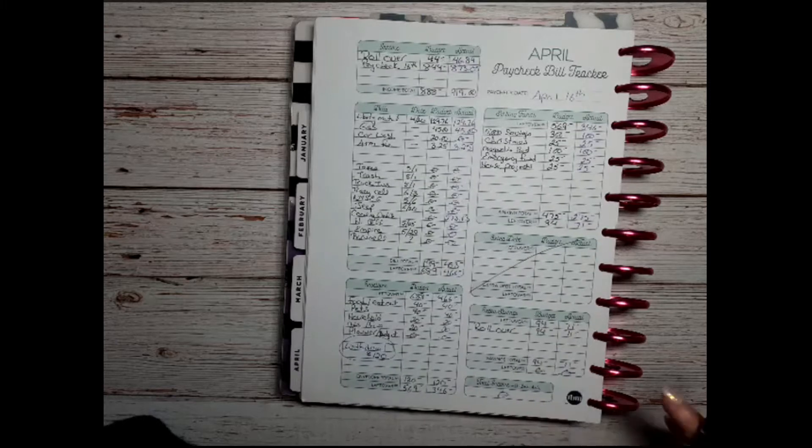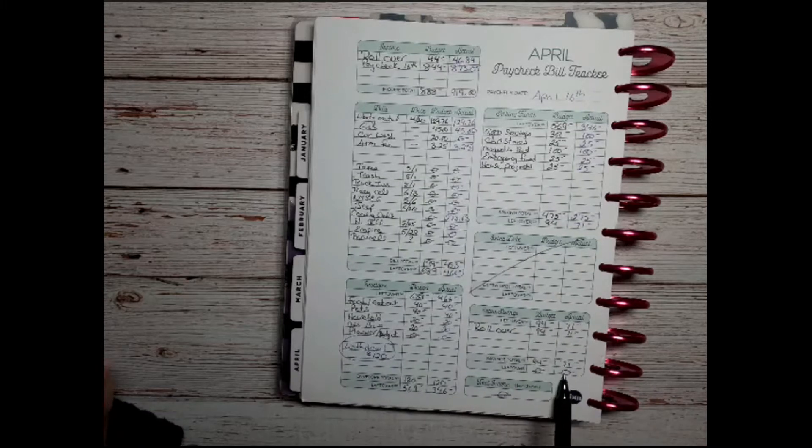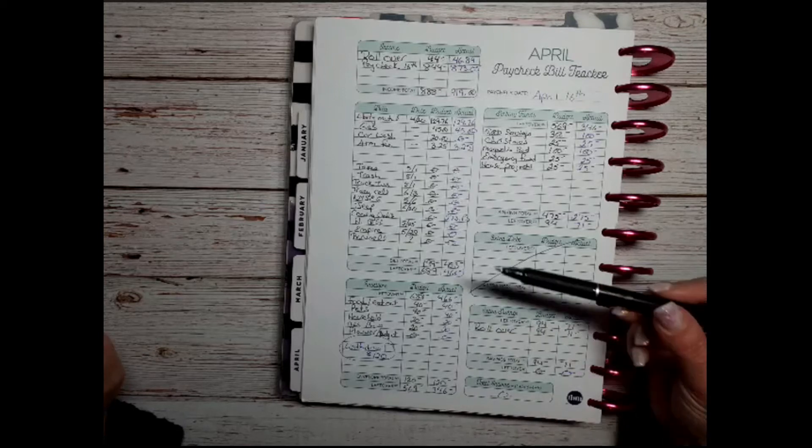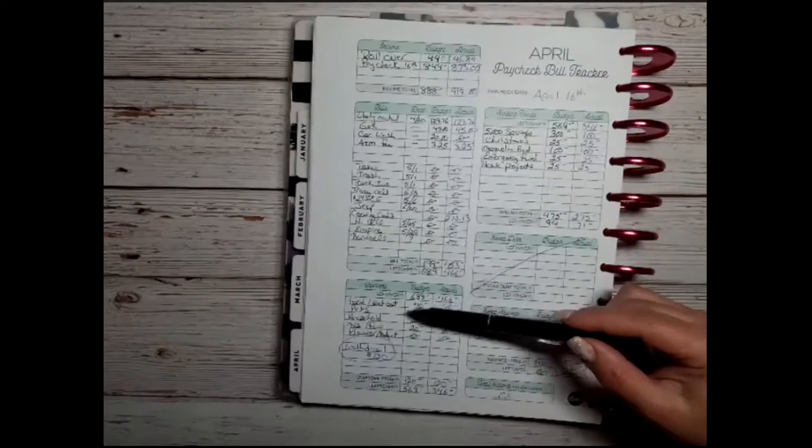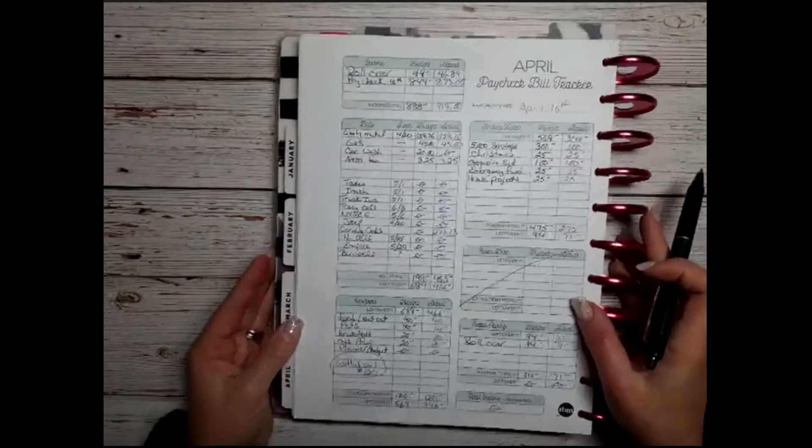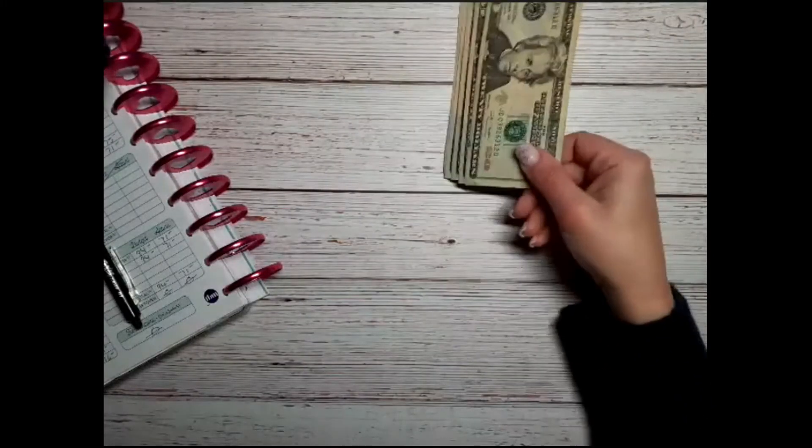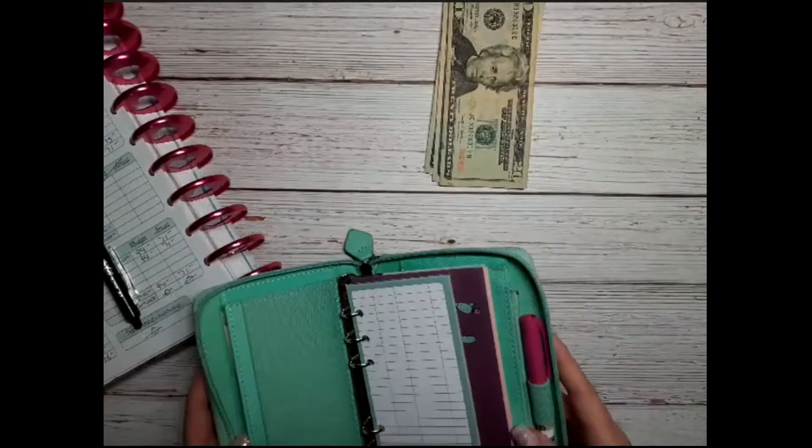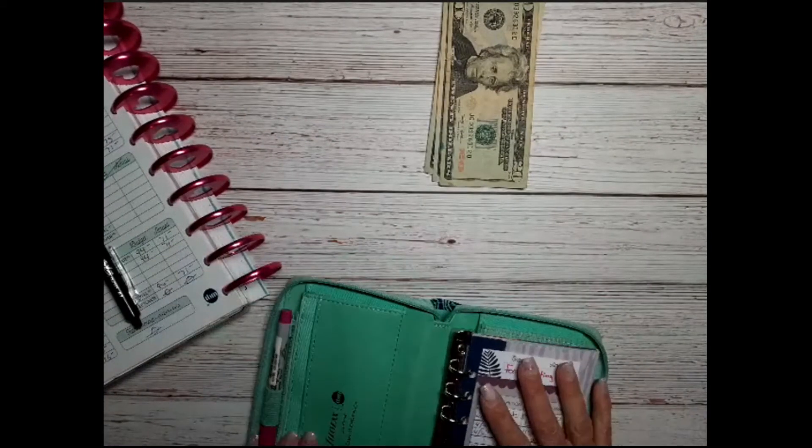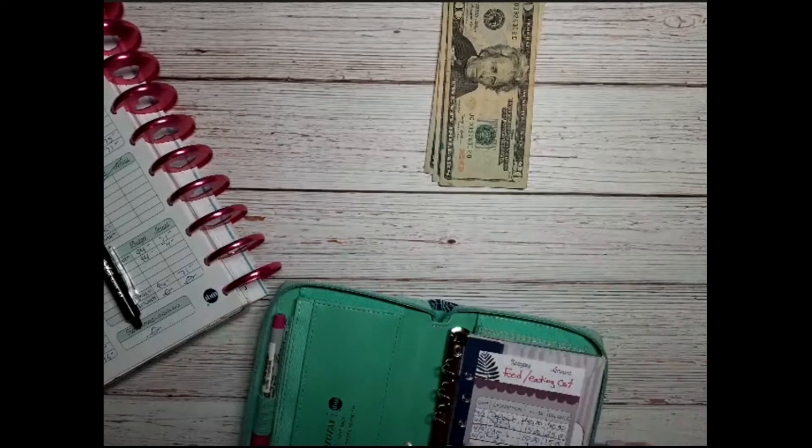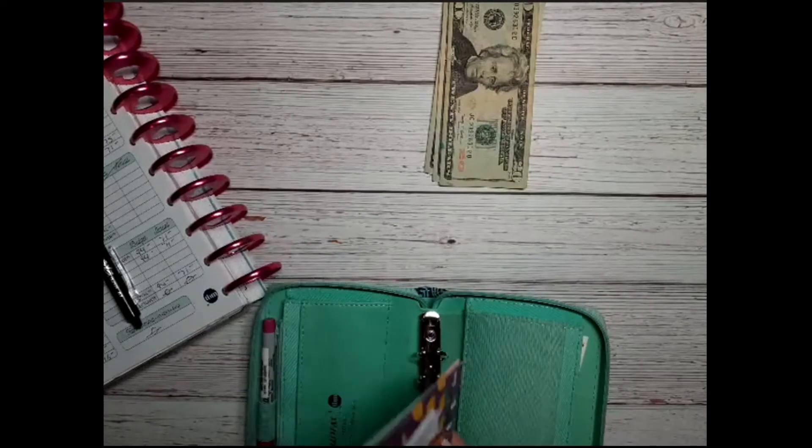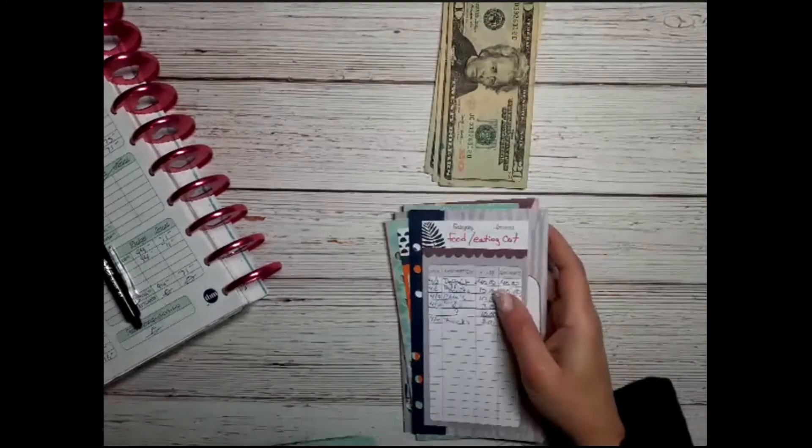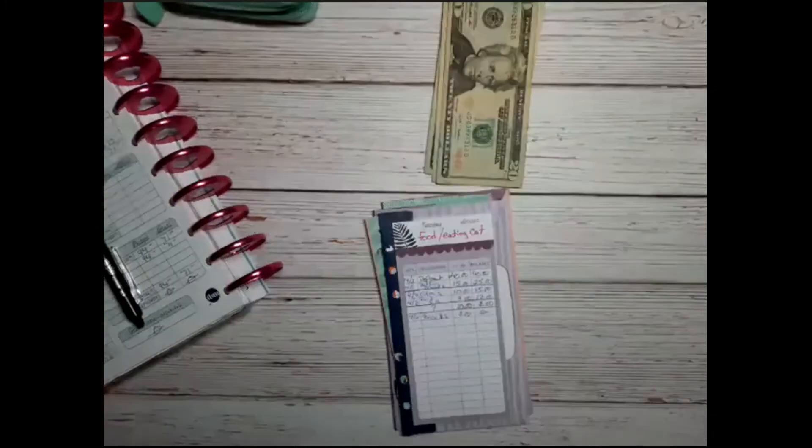Subtract that from what's left over brings us to $71, and we're just going to roll that $71 over. So that brings us down to a zero because it's a zero-based budget. So let's go ahead and do our envelopes and sinking funds. We'll do the cash envelopes first. So we have our money, check all of our envelopes out, bring in the calculator.